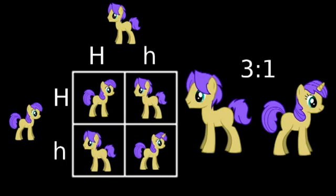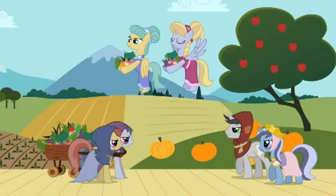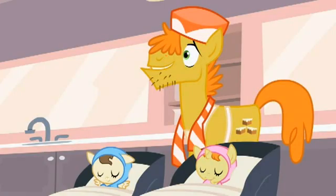An earth pony can be a carrier of sorts for the traits for wings and horns. I'm guessing that when the three pony tribes were separate, the unicorns and pegasi were both homozygous recessive for many generations, until they started to interact more with the earth ponies. And that's how we have families that can have different types of ponies related to one another, since it's very likely that nearly all the earth ponies are heterozygous. That's just a guess though.